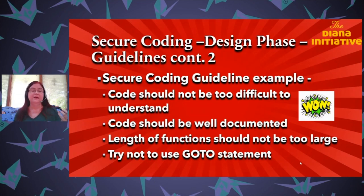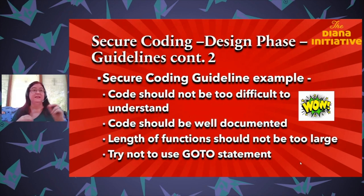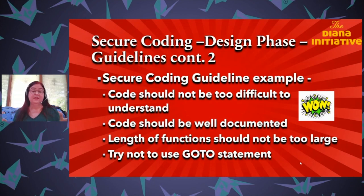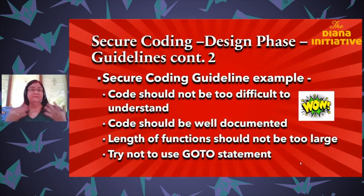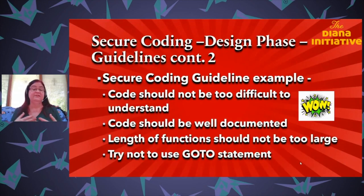I've seen some legacy programs where they did not want to fix spaghetti code. I found errors and they said 'fix that one line' — I eventually left that program because I couldn't handle it. Also, regarding 'go to' statements: trying to debug a program when you have a failure in code that has 'go to' is just problems. Do try not to use 'go to' statements — that should be in your guidelines.